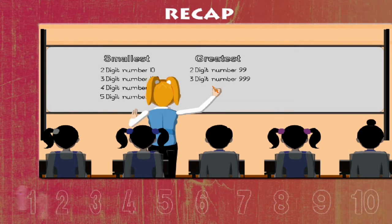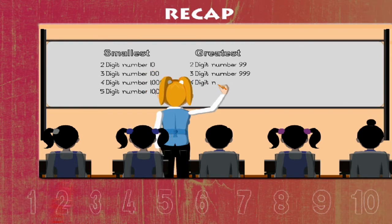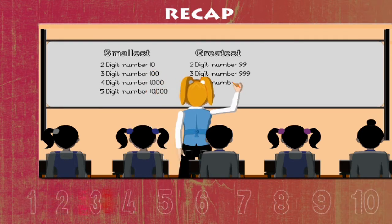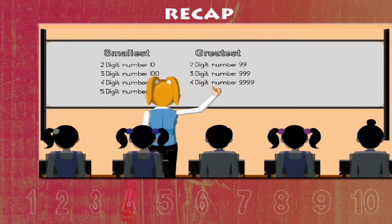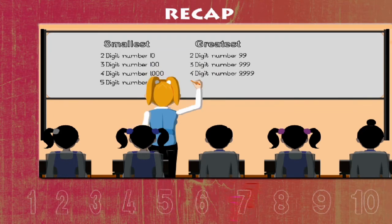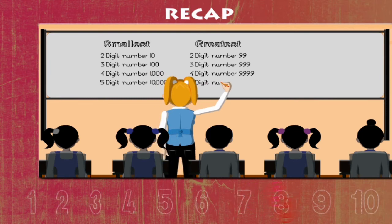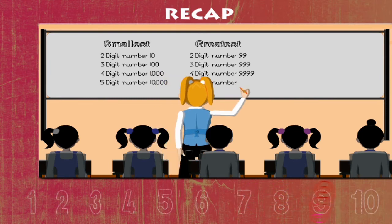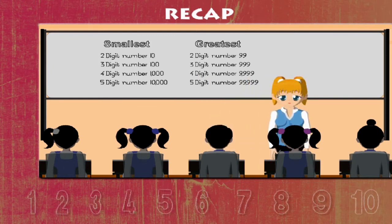What about the four digit number? Yes, come on. Nine thousand nine hundred and ninety-nine. Finally, tell me the five digit number. It's ninety-nine thousand nine hundred and ninety-nine.